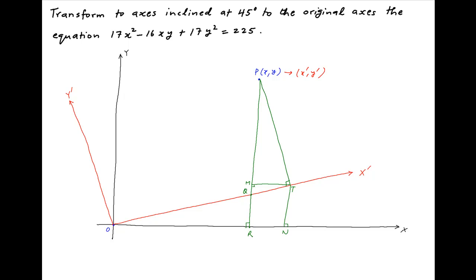Let's assume that the coordinates of P are X' and Y' relative to the new axes OX' and OY'. Note that the distance PT is equal to Y' and the distance OT is equal to X'.